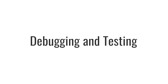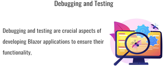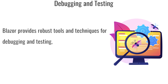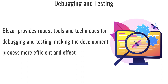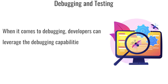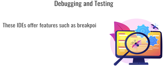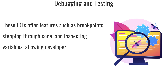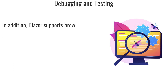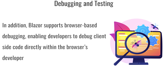Debugging and testing Blazor applications: Debugging and testing are crucial aspects of developing Blazor applications to ensure their functionality, reliability, and performance. Blazor provides robust tools and techniques for debugging and testing, making the development process more efficient and effective. Developers can leverage the debugging capabilities of IDEs like Visual Studio or Visual Studio Code, which offer features such as breakpoints, stepping through code, and inspecting variables, allowing developers to identify and resolve issues. Additionally, Blazor supports browser-based debugging, enabling developers to debug client-side code directly within the browser's developer tools.